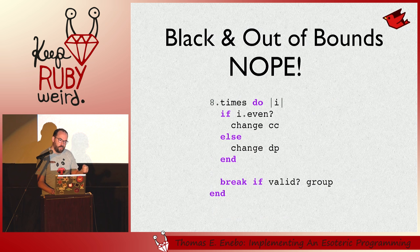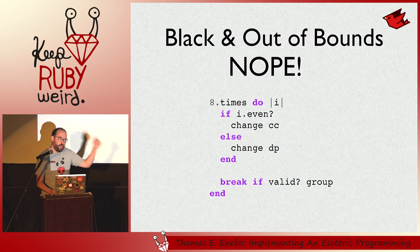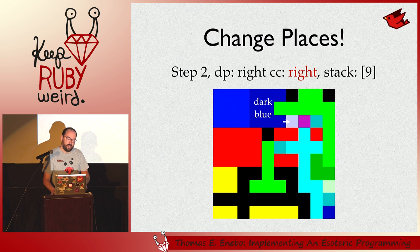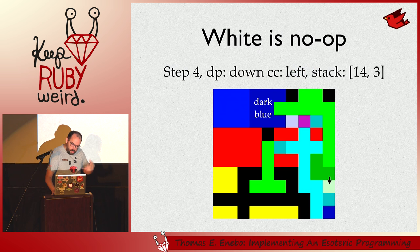When you encounter either of those conditions, you use this algorithm where you toggle between the codel chooser and the direction pointer up to eight times. If you find a valid place to go, you continue executing. If you can't find a place in eight tries, the program terminates. This is how you normally terminate a Piet program. Going back to step two, the codel chooser shoots us from left to right, and we drop down to the bottom and navigate on. White is a no-op — you slide right through it.